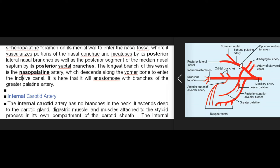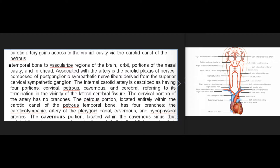The internal carotid artery has no branches in the neck. It ascends deep to the parotid gland, digastric muscle, and muscles attached to the styloid process, in its own compartment of the carotid sheath. It gains access to the cranial cavity via the carotid canal of the petrous temporal bone to vascularize regions of the brain, orbit, and portions of the nasal cavity. Associated with the artery is the carotid plexus of nerves, composed of postganglionic sympathetic nerve fibers from the superior cervical sympathetic ganglion. The internal carotid artery is described as having four portions: cervical, petrous, cavernous, and cerebral.